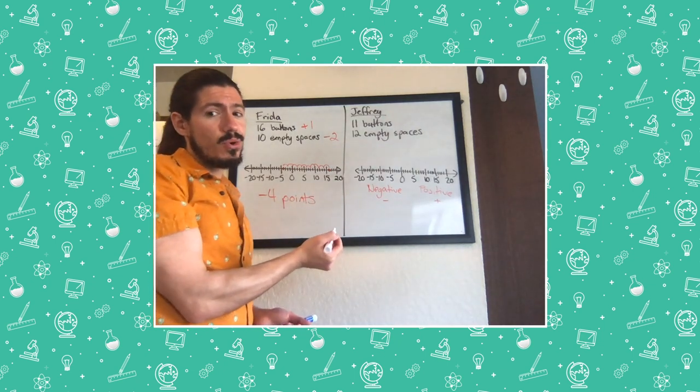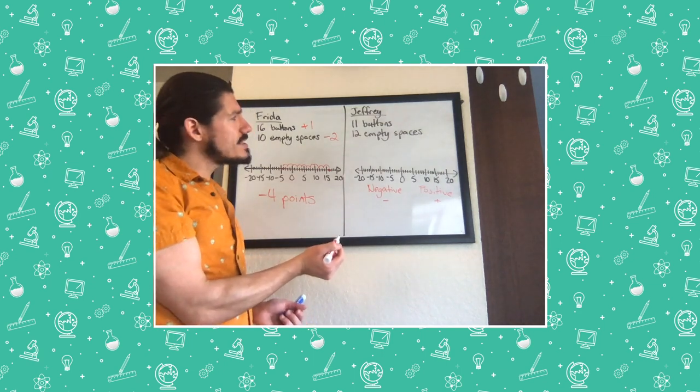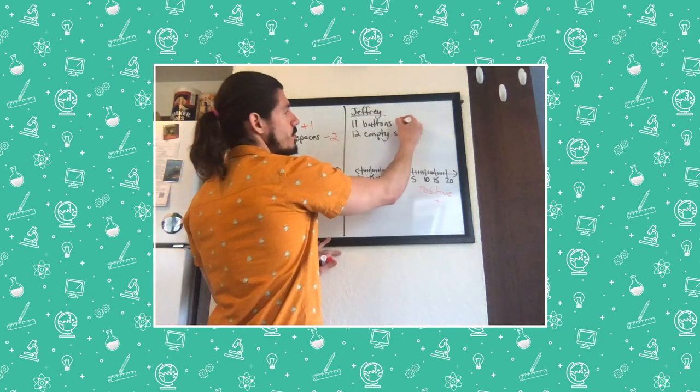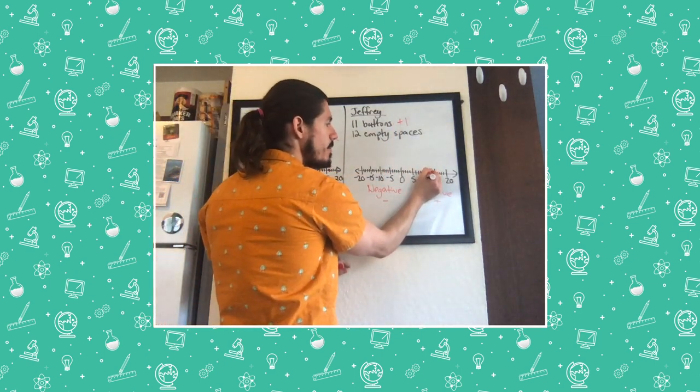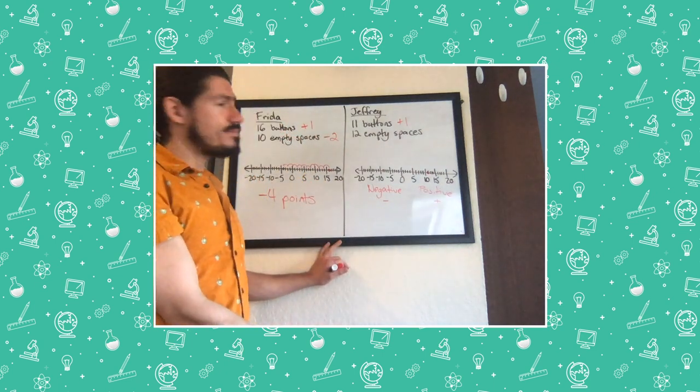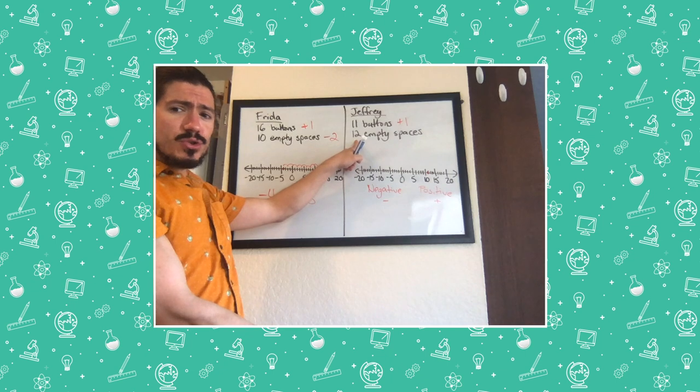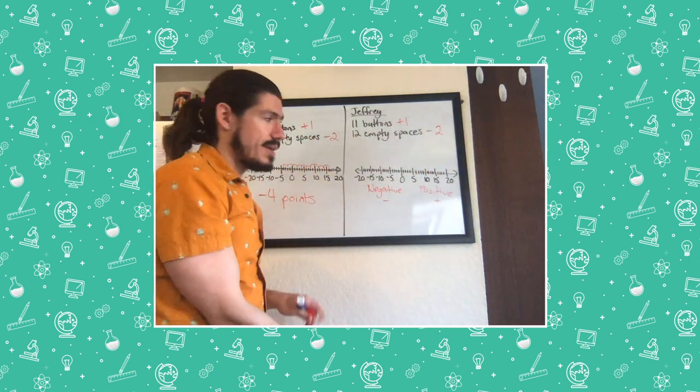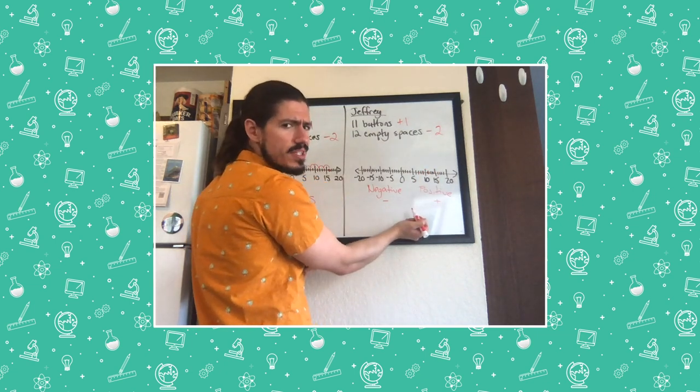That might not seem like a good score, but in patchwork, it's actually pretty good. Now let's go to Jeffrey. Jeffrey got 11 buttons. Remember, that's all worth one point. So I'm going to go ahead and mark 11 on the number line. And now I need to go down 12 empty spaces. That's negative two for every empty space. Can you think, what's Jeffrey's score going to be?